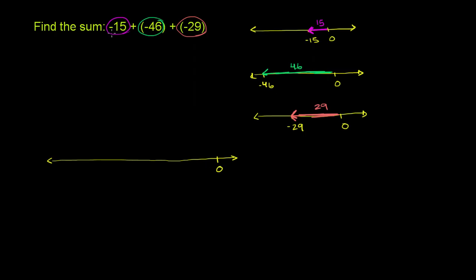We're going to start at 0. First we have negative 15, so we move 15 spaces to the left to get to negative 15. Then we go 46 spaces to the left to get to negative 15 plus negative 46. We don't know yet what number that gets us to — that's the point of this problem. But we know the length of that arrow is 46, pointing to the left.